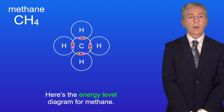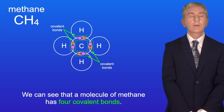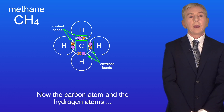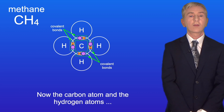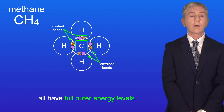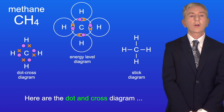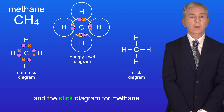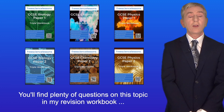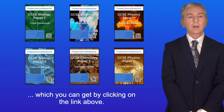Here's the energy level diagram for methane. We can see that a molecule of methane has four covalent bonds, and now the carbon atom and the hydrogen atoms all have full outer energy levels. Here are the dot and cross diagram and the stick diagram for methane. You'll find plenty of questions on this topic in my revision workbook, which you can get by clicking on the link above.